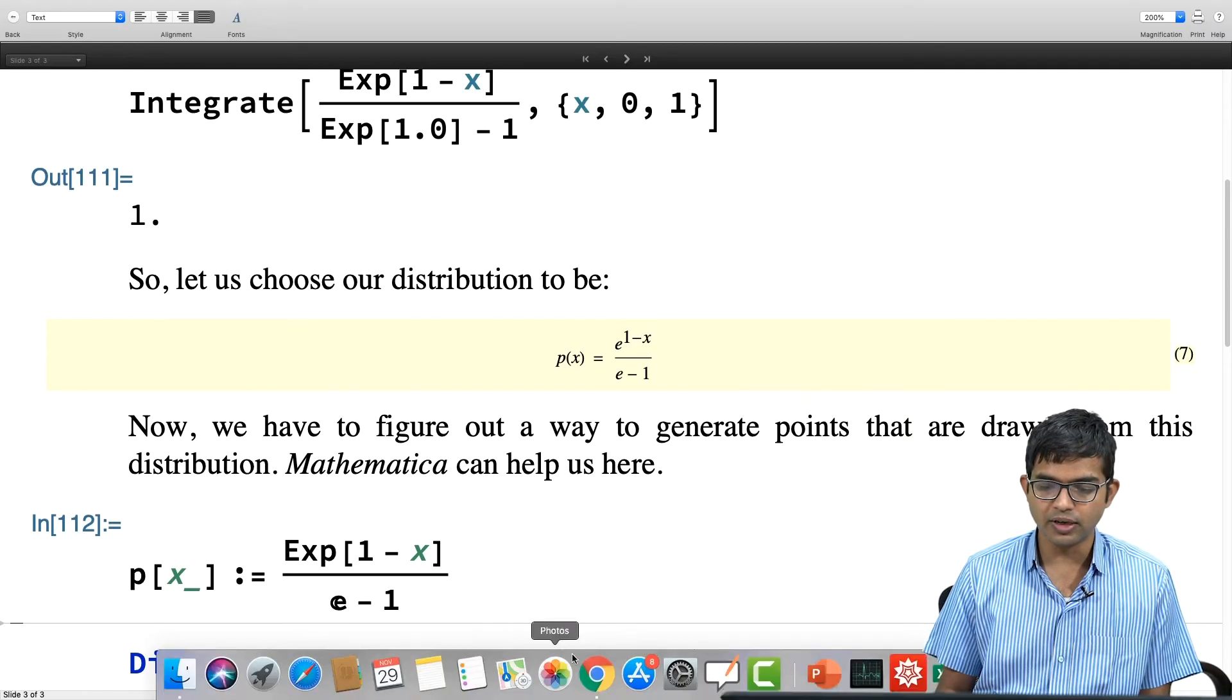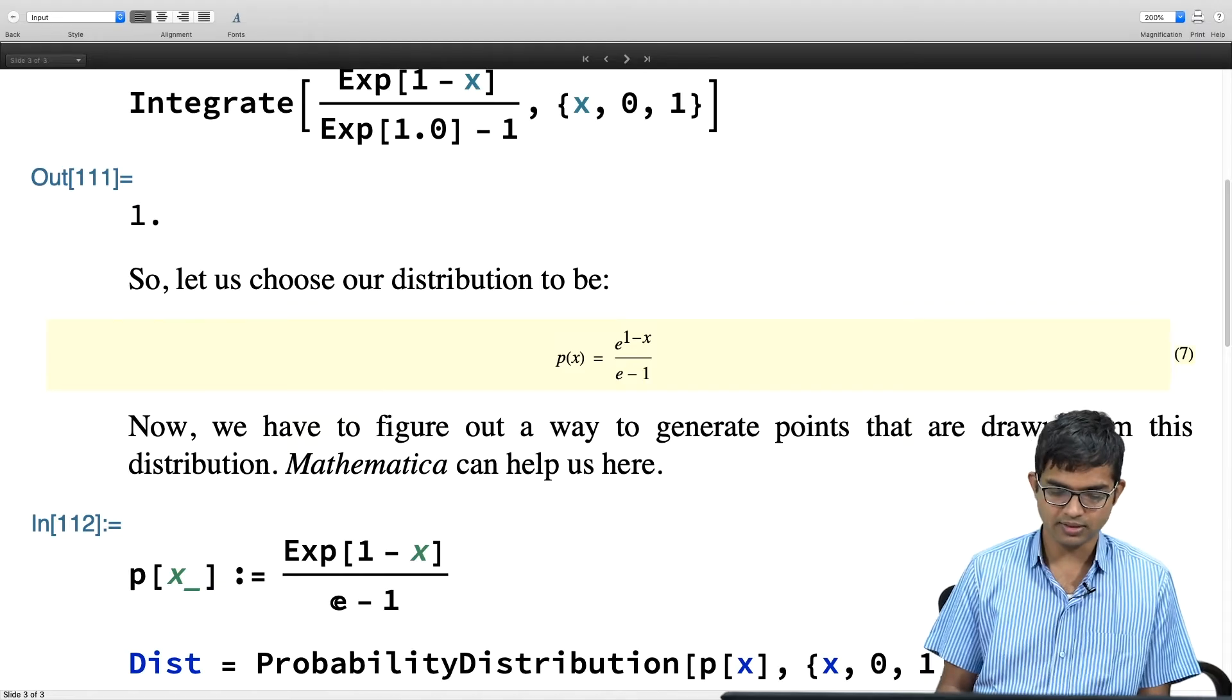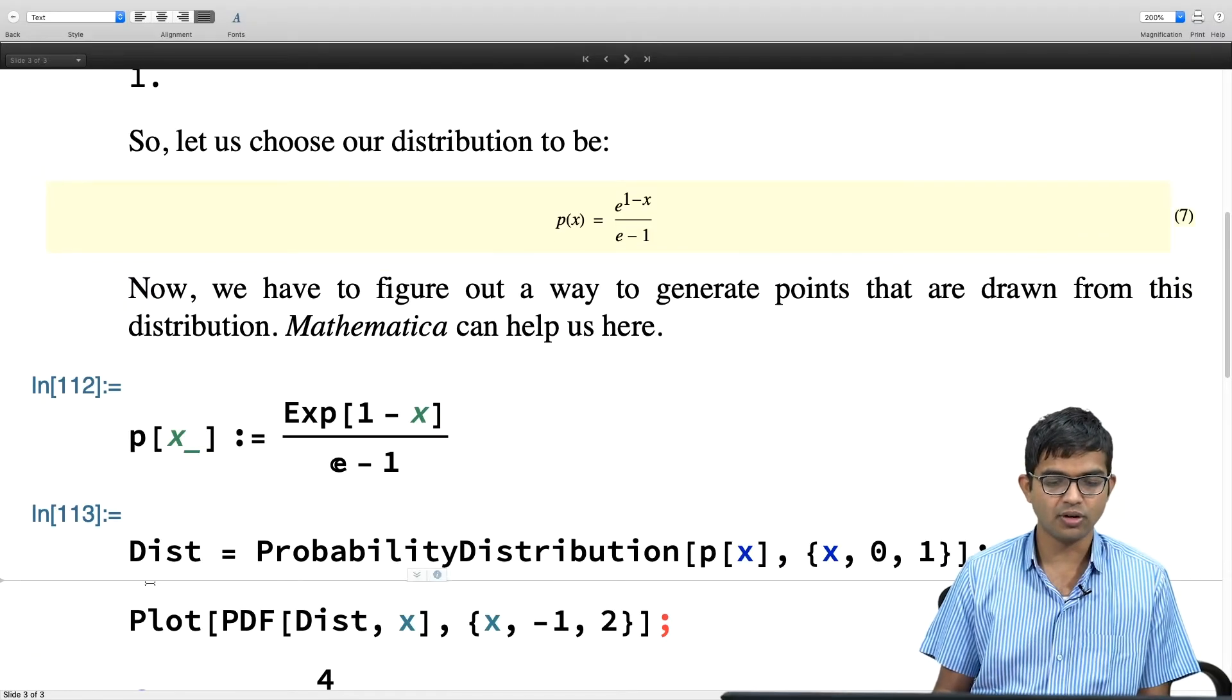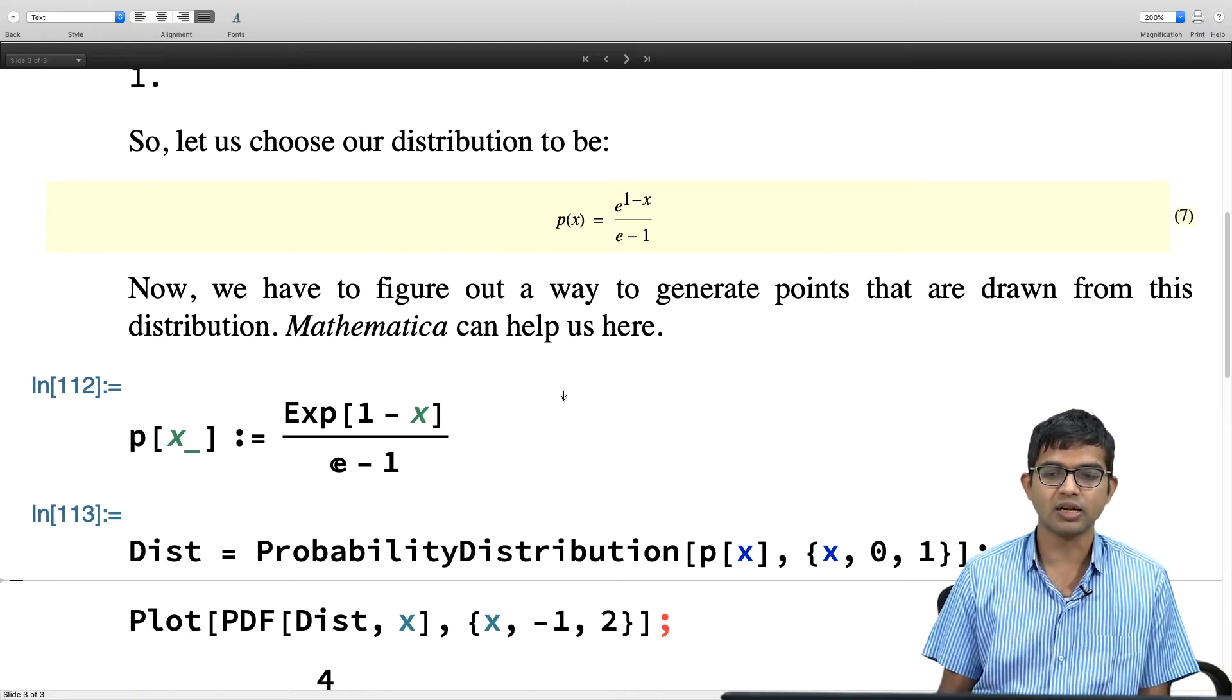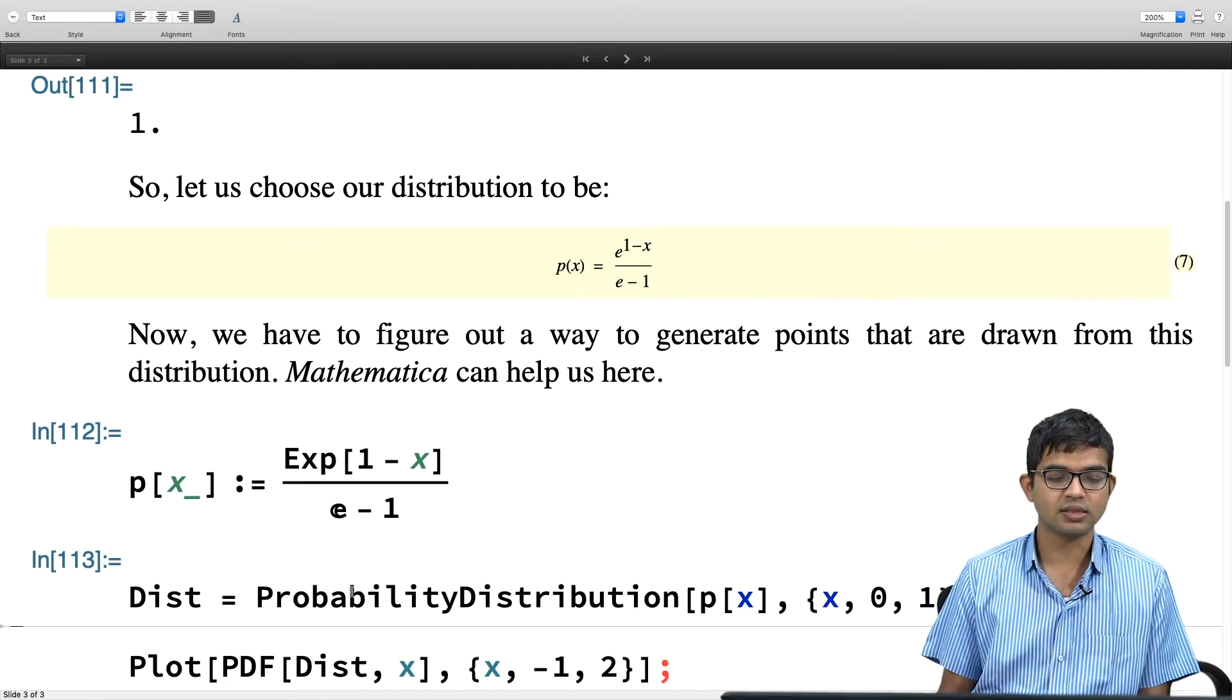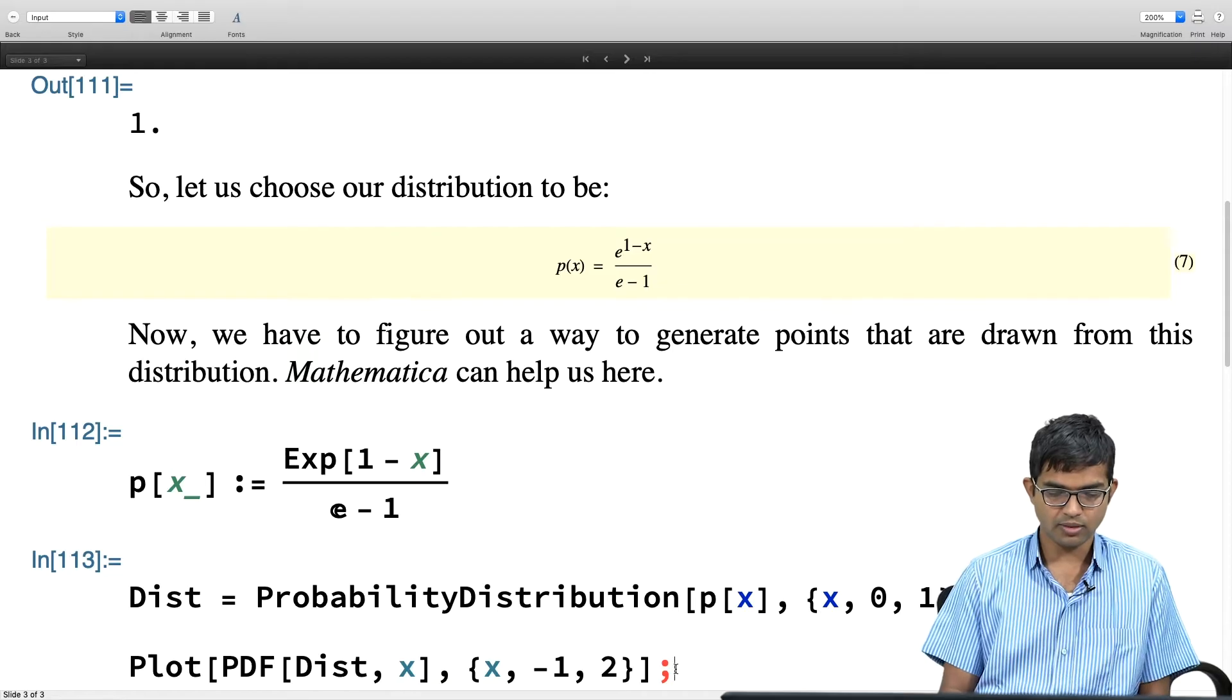I will choose my distribution to be e to the 1 minus x divided by e minus 1. You can again verify that this function is already normalised. In fact, let me do this with Mathematica. I have 1 minus x divided by exponential of 1. It is indeed 1, exactly 1. Okay, so now we have to figure out a way to generate. This is a crucial new step that we have to take.